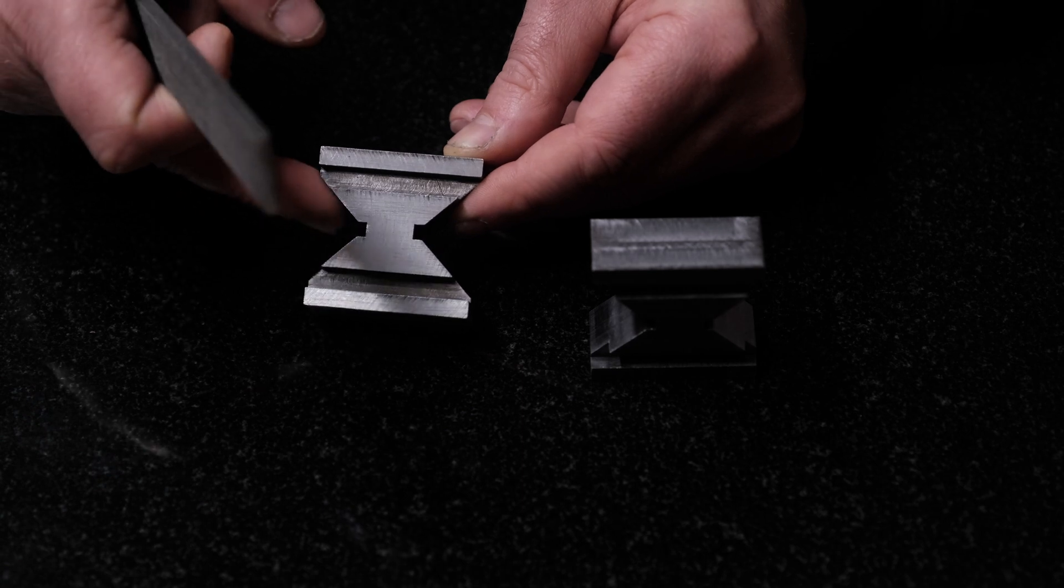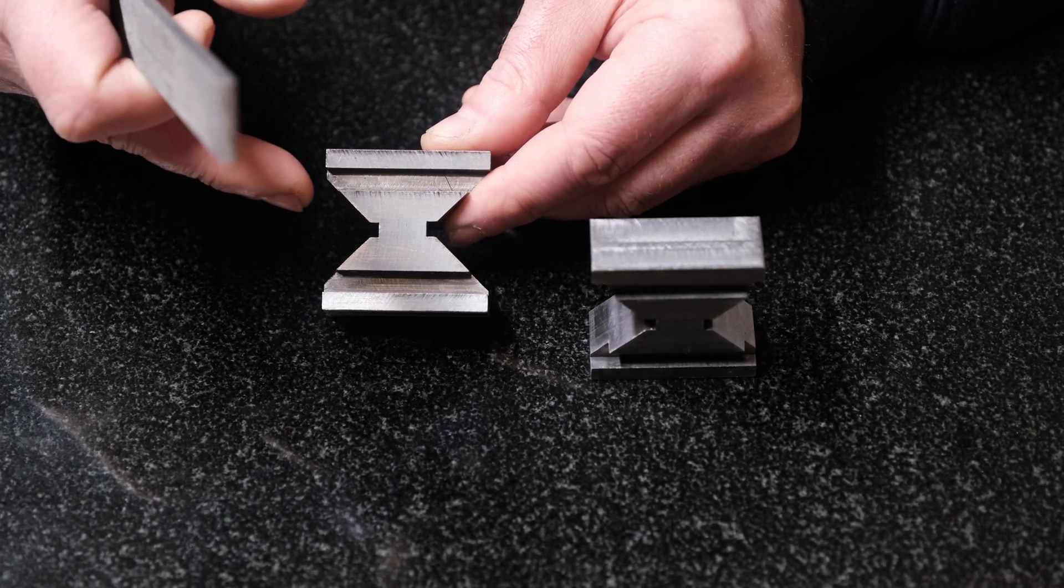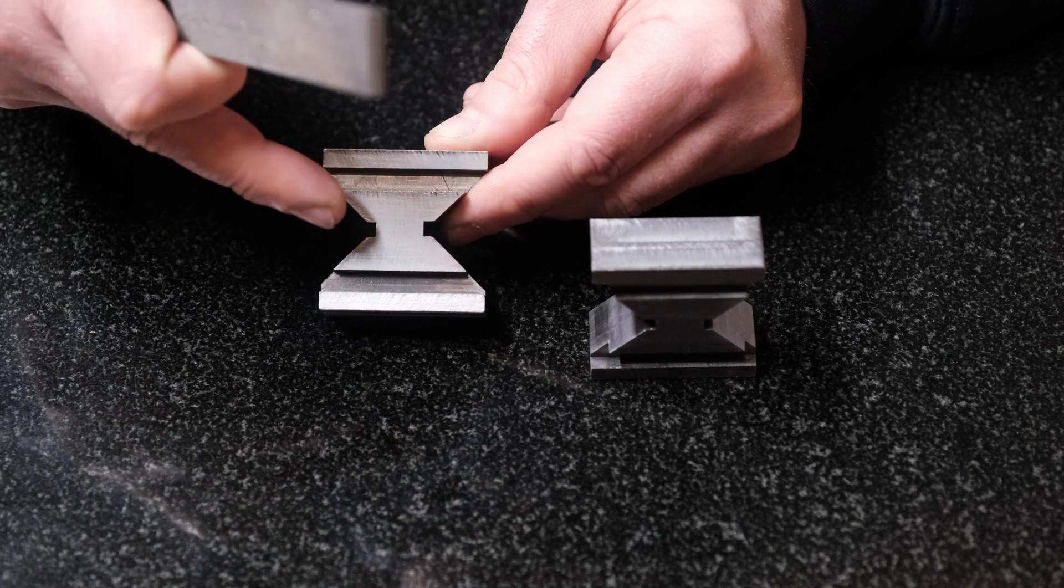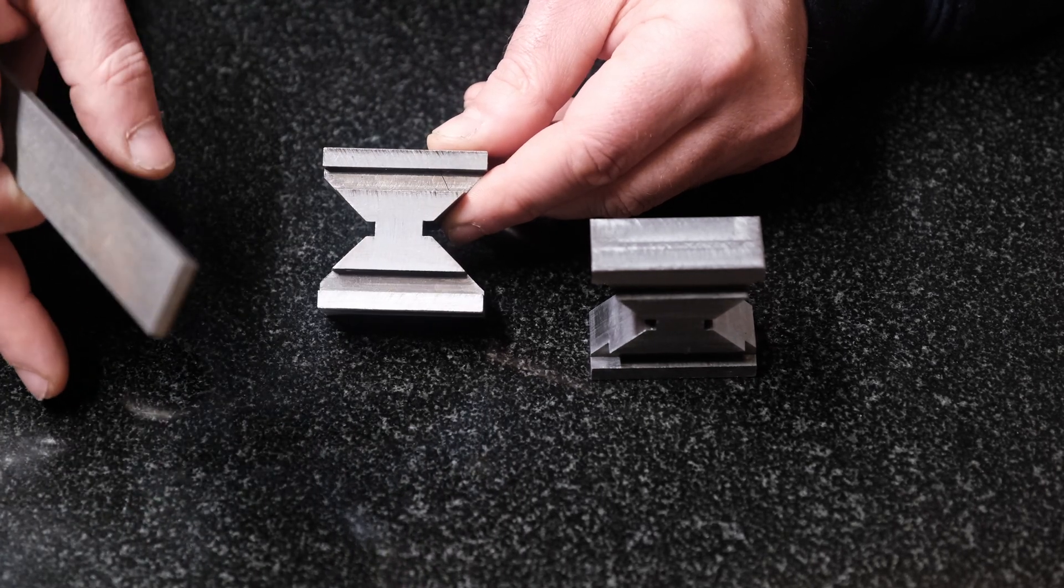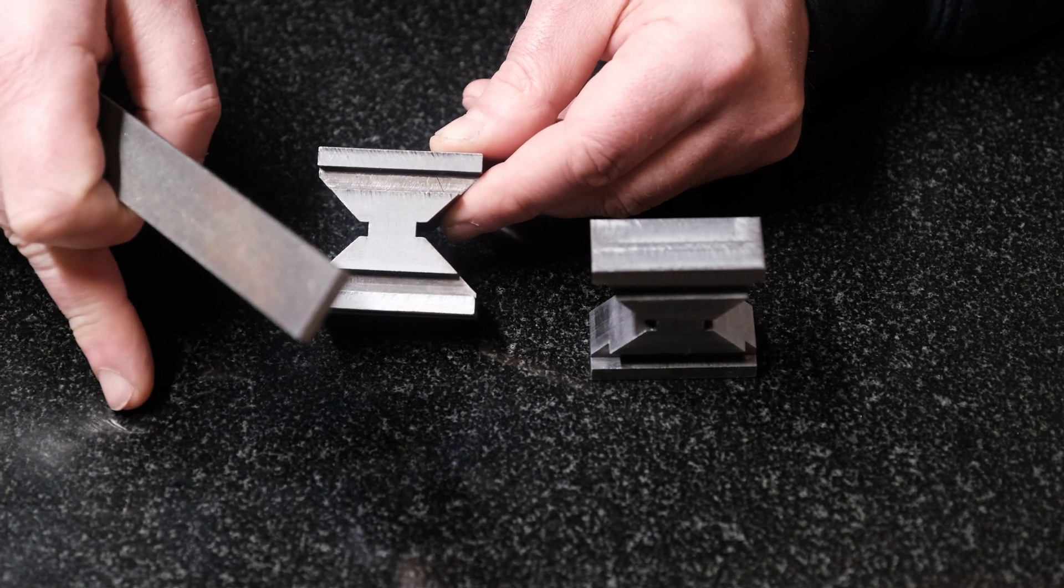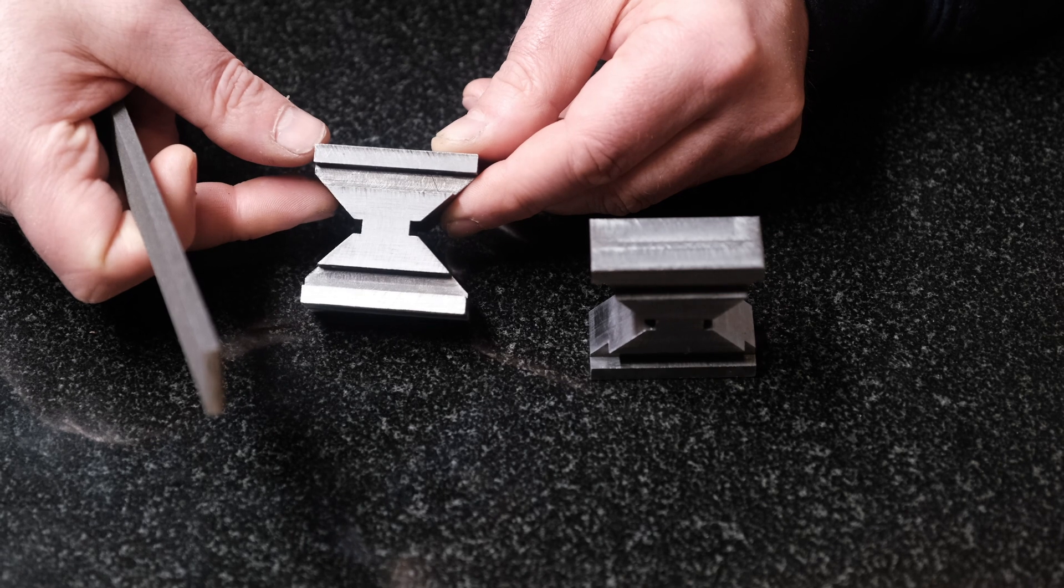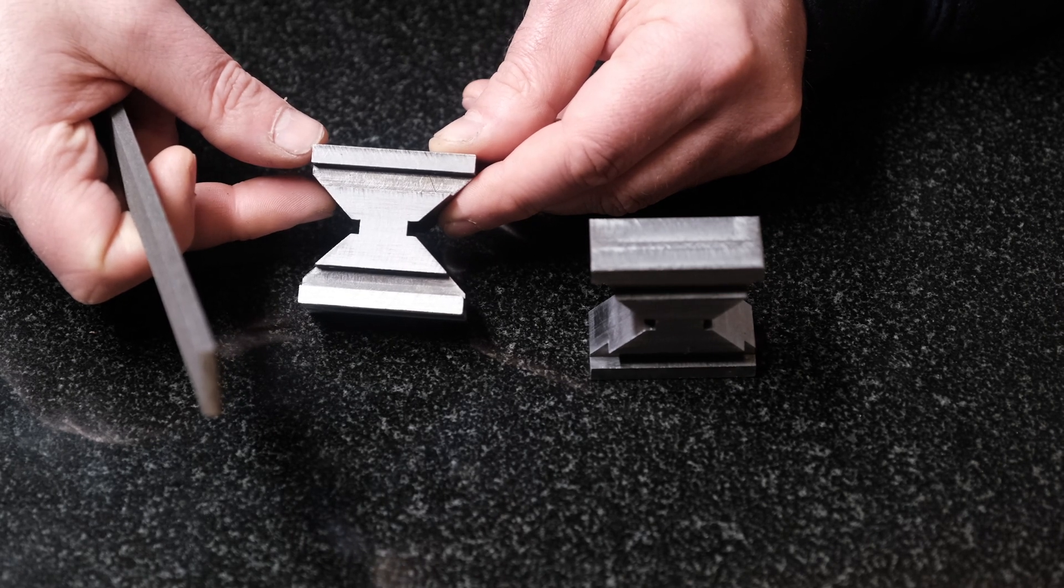What I'm going to do now though is get the DTI, the dial test indicator, and I'm just going to see how accurate they are. Bearing in mind I don't have a proper surface plate and I don't have a perfectly round bar, but I'll give it a test. If I'm within a tenth of a millimetre I'll be happy, but let's see what they're like.